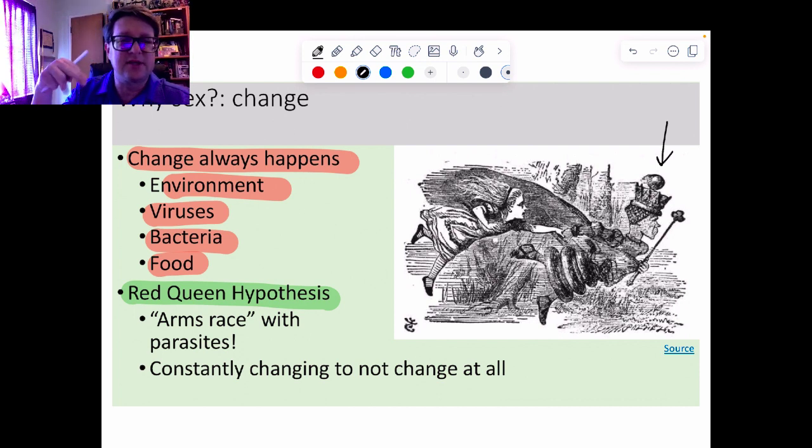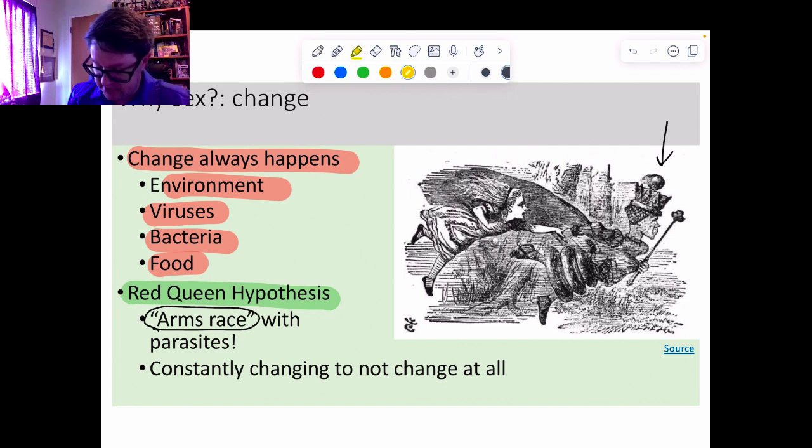They were running and running and running but they stayed in the same spot. So they were basically running in place, except they felt the wind blowing and all that other fun stuff and out of breath, but they didn't go anywhere. This is what in evolution speak and genetic speak and biology speak is referred to as an arms race.